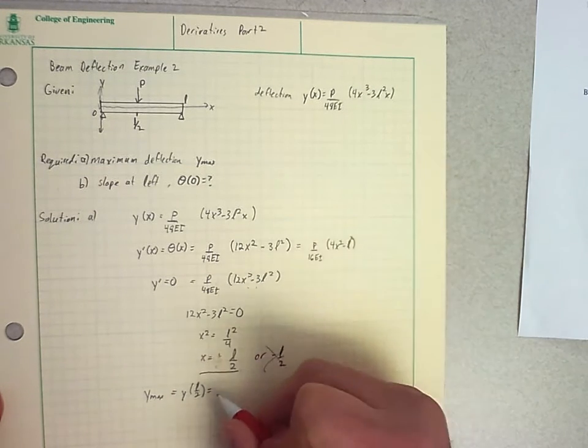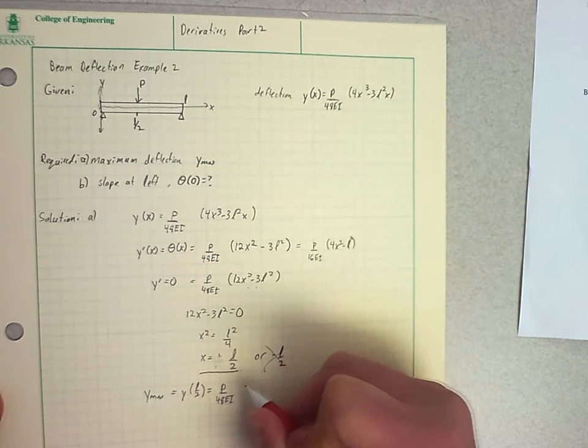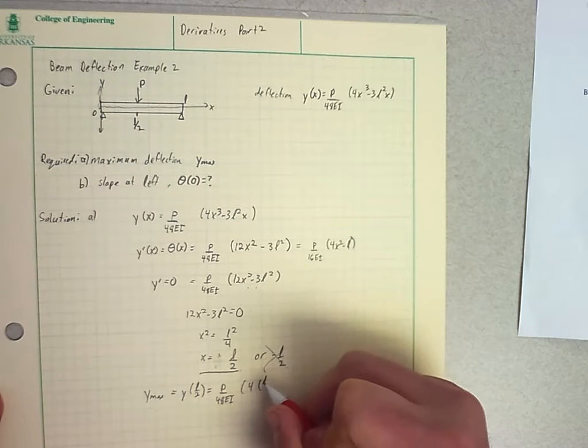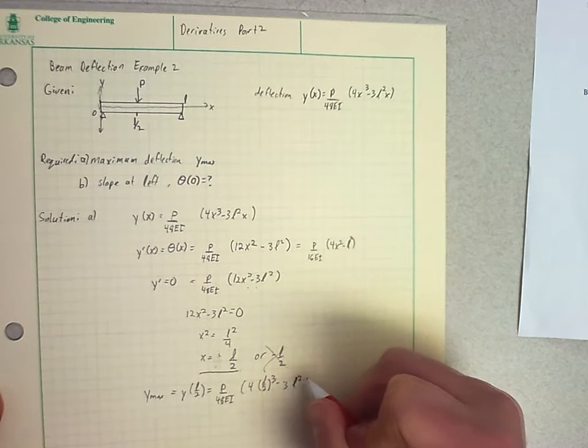So my function being P over 48 EI times 4 times L over 2 cubed minus 3 L squared times L over 2.